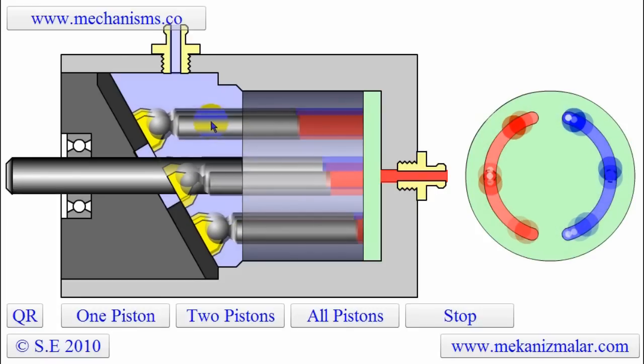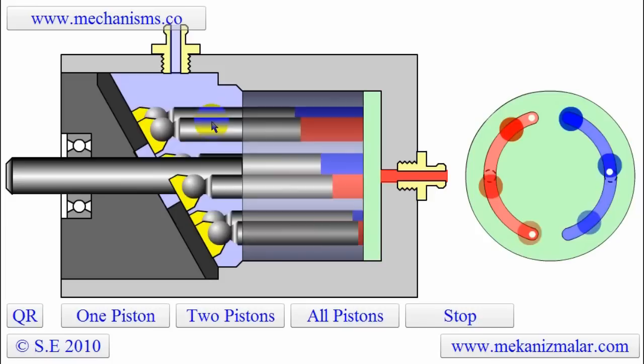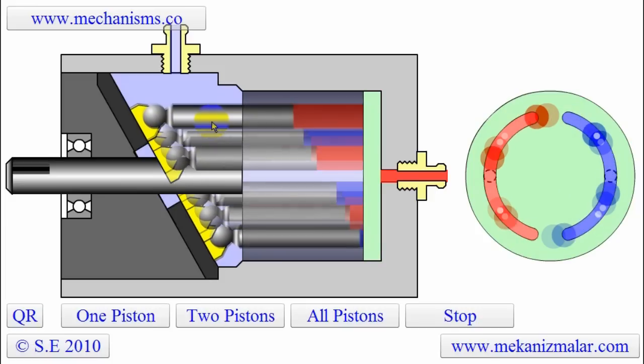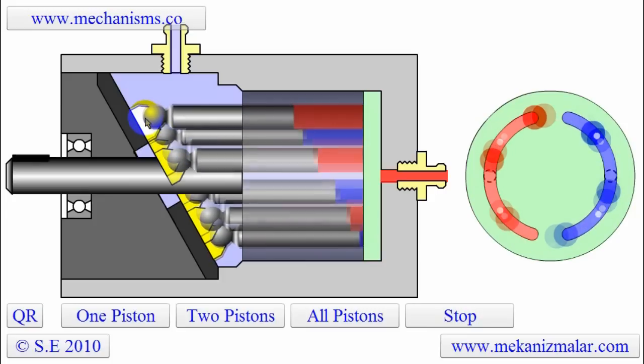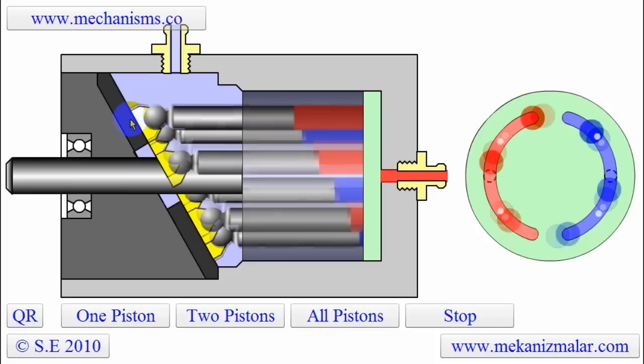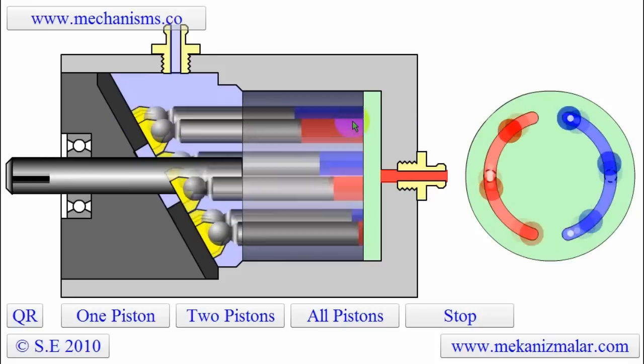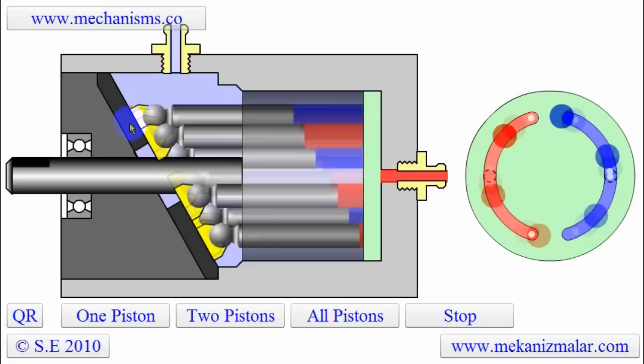The rotation of the barrel forces the pistons to rotate with the barrel. The round ends of the pistons are connected to the yellow shoes which slide on an inclined black swashplate. Springs in the cylinder barrel, which are not shown in this animation, force the pistons towards the swashplate.